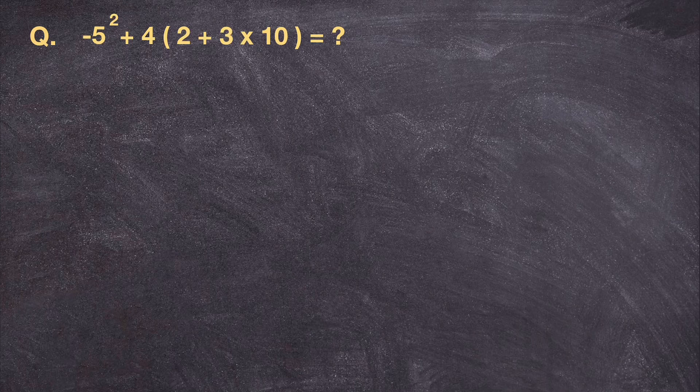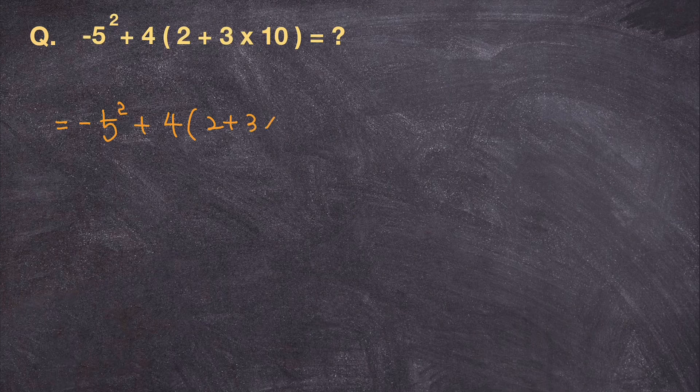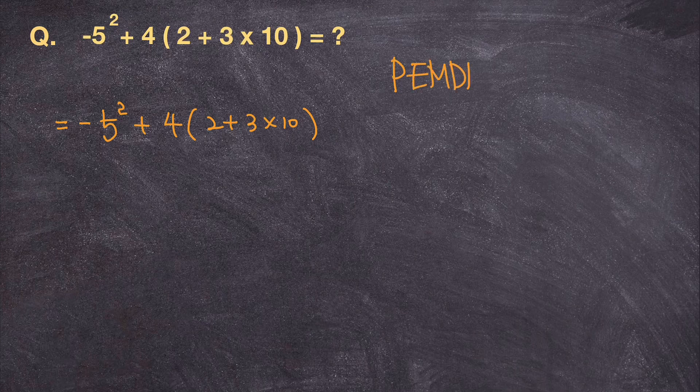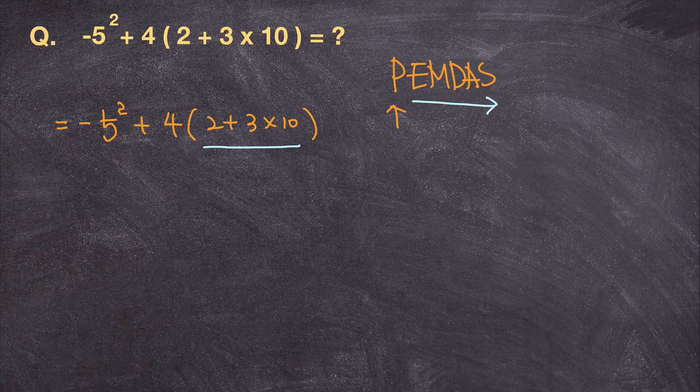So let's go ahead and do that. And I have negative 5 squared plus 4, 2 plus 3 times 10. And according to the order of operation or the rule of PEMDAS, I need to first take care of parenthesis. So I'm going to take a look at what I have within the parenthesis and solve that out before I move on to the rest of my steps.